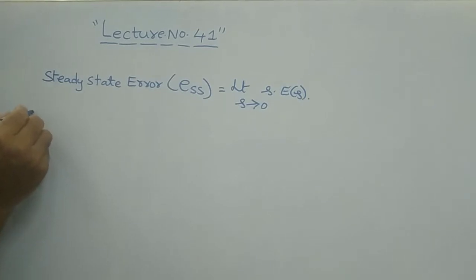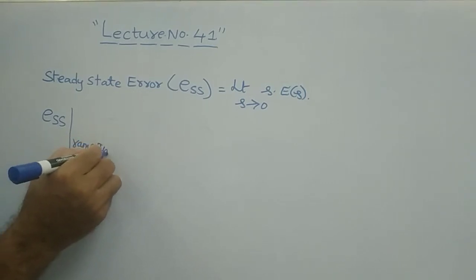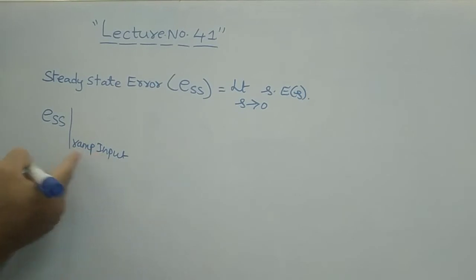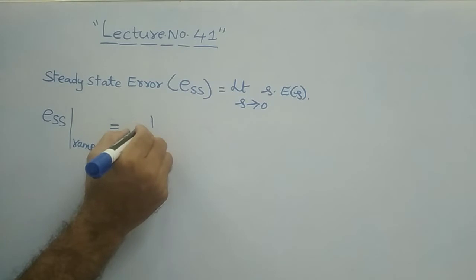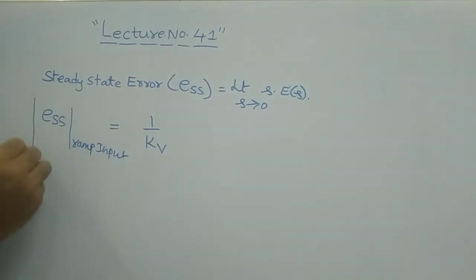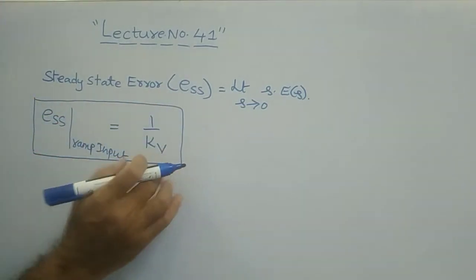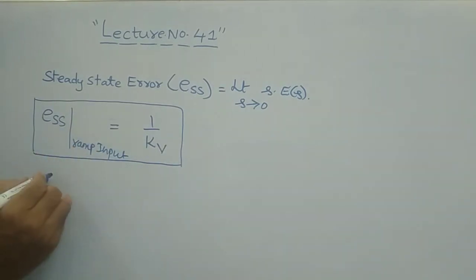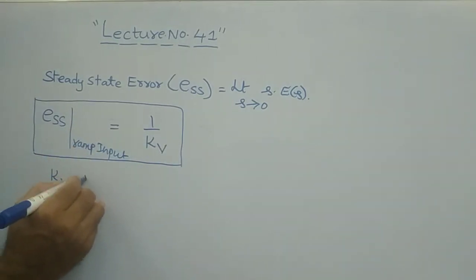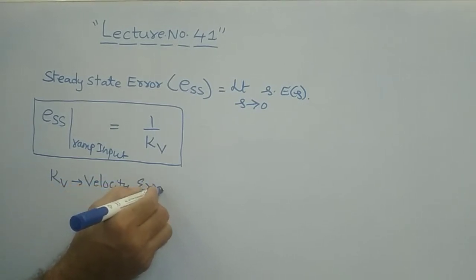The steady state error for ramp input, ESS ramp, is equal to 1 by KV, where KV is the velocity error constant. KV is defined as the limit as s tends to 0 of s times G(s) times H(s). This is the velocity error constant.